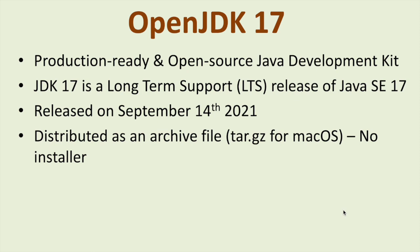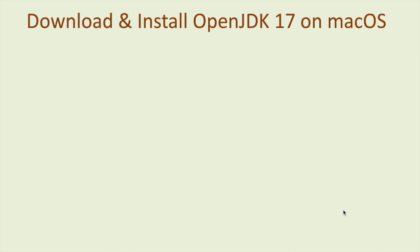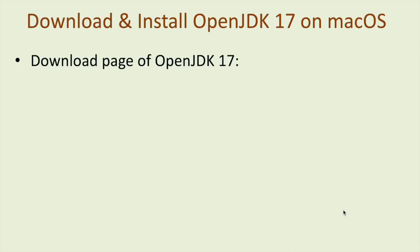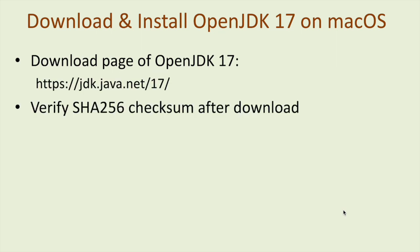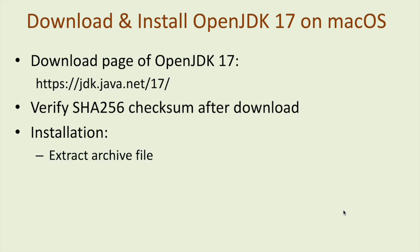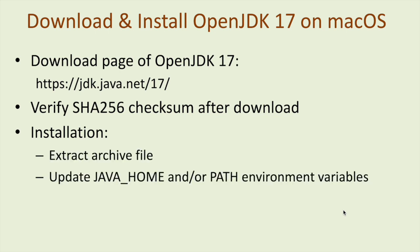OpenJDK 17 is distributed as an archive file (.tar.gz) for macOS, without any installer. The official download page is at jdk.java.net/17. After downloading, you need to verify the SHA256 checksum, then extract the archive file and update the JAVA_HOME and PATH environment variables.